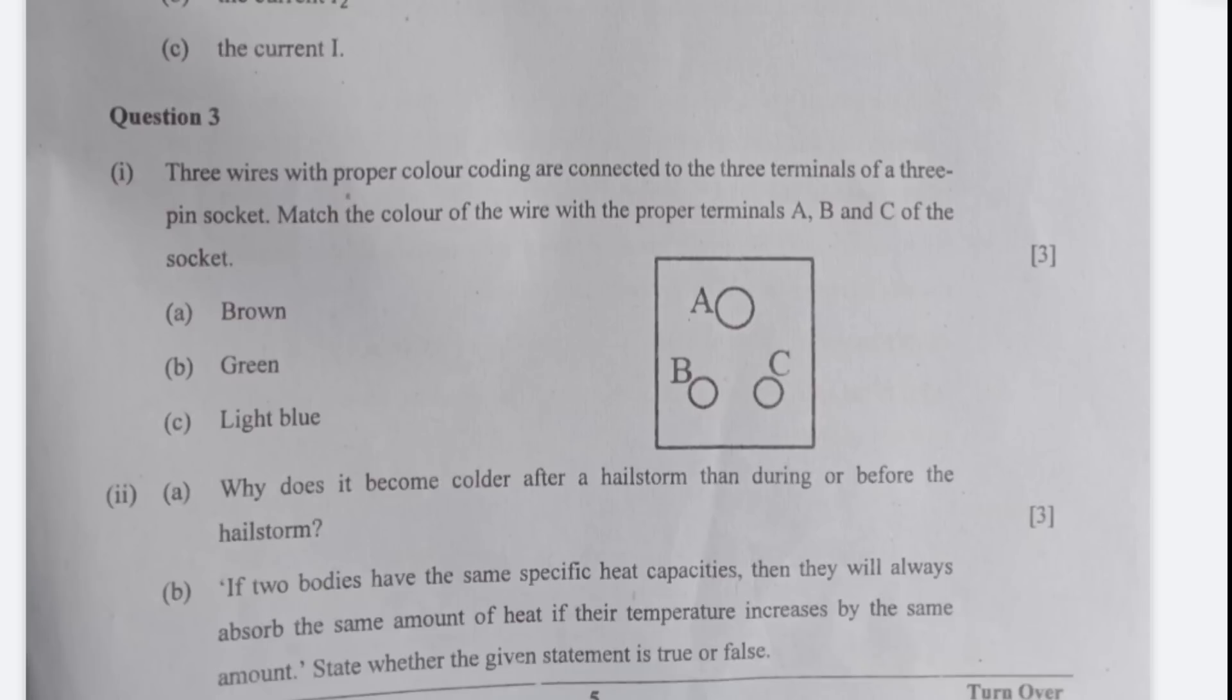Let's now move to question number three. Three wires with proper color coding are connected to the three terminals of a three pin socket. Match the color of the wire with the proper terminals A, B and C of the socket. A will be green, B will be light blue and C will be brown. If the students have made a mistake and read three pin socket as a three pin plug they may have possibly committed a mistake there. They would have interchanged B and C which would have been wrong. I hope you did not do so.